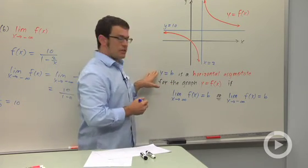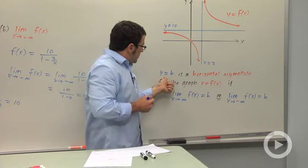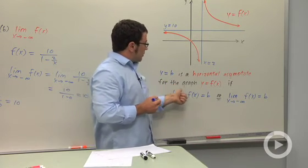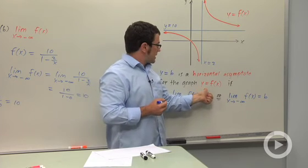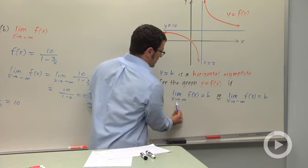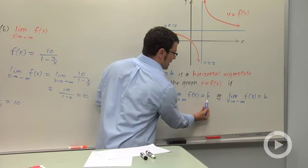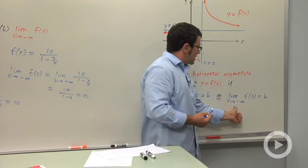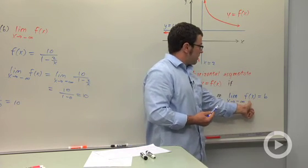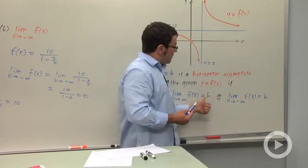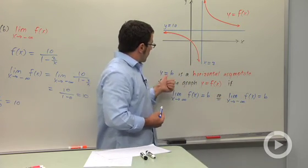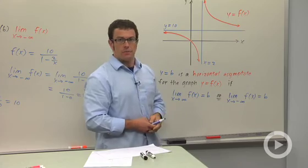And here's our definition of horizontal asymptote. y equals b is a horizontal asymptote for the graph of a function y equals f of x if the limit as x approaches infinity of f of x is b, or if the limit as x approaches negative infinity of f of x equals b. You only need one of these to be true in order for y equals b to be a horizontal asymptote.